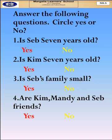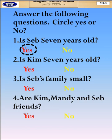Our very first question is we have to answer the following questions — we have to circle yes or no. The first question is: is Seb 7 years old? Yes, the answer is right. Our next question is: is Kim 7 years old? No, Kim was only 6 years old.